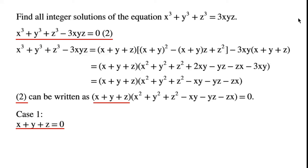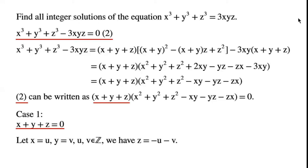Case 1: x plus y plus z equals 0. Let x equal u, y equal v, where u and v are integers. We have z equals minus u minus v.